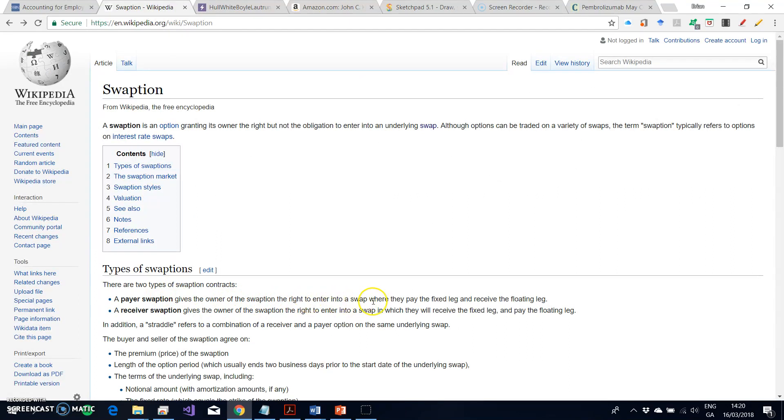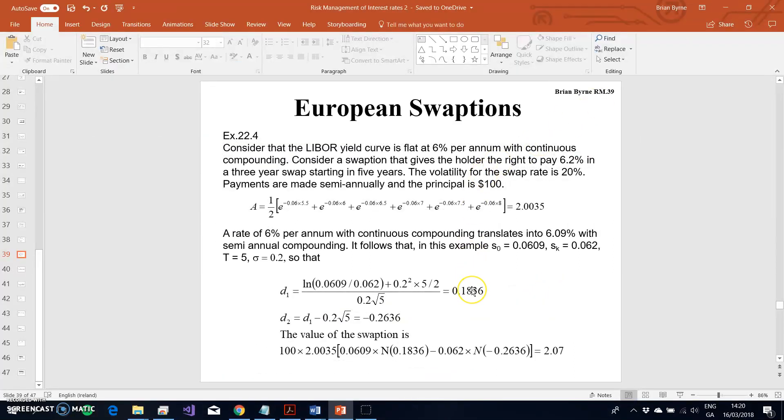of the swaption the right to enter into a swap where they pay the fixed leg and receive the floating leg. That for all intents and purposes is like a call option. We take d1 and d2, the forward swap rate appears here, we take the product of the forward swap rate and d1 minus sK.